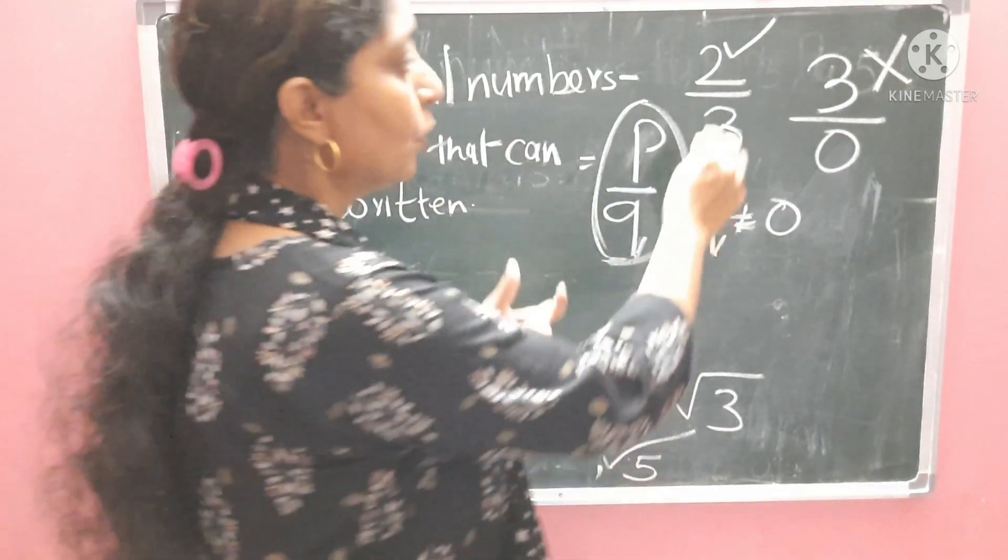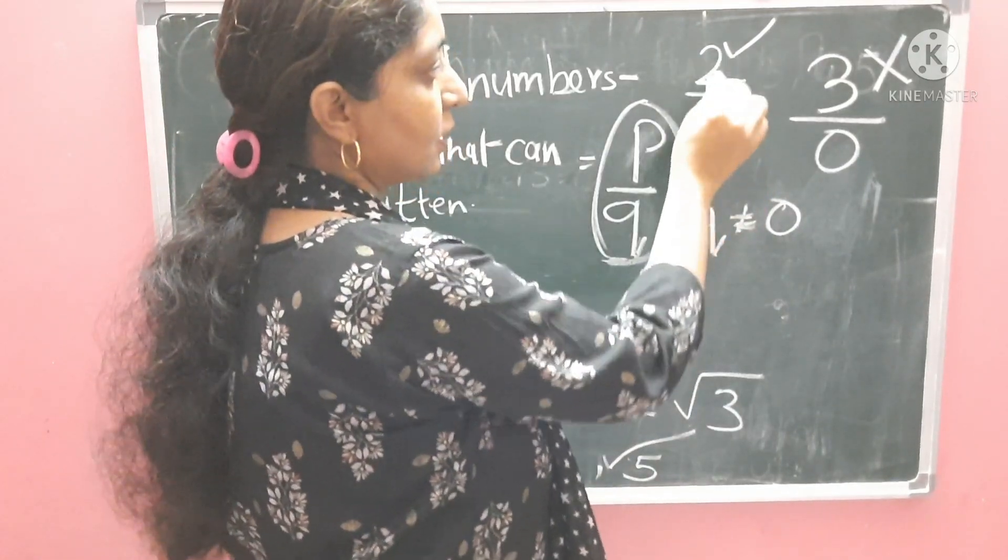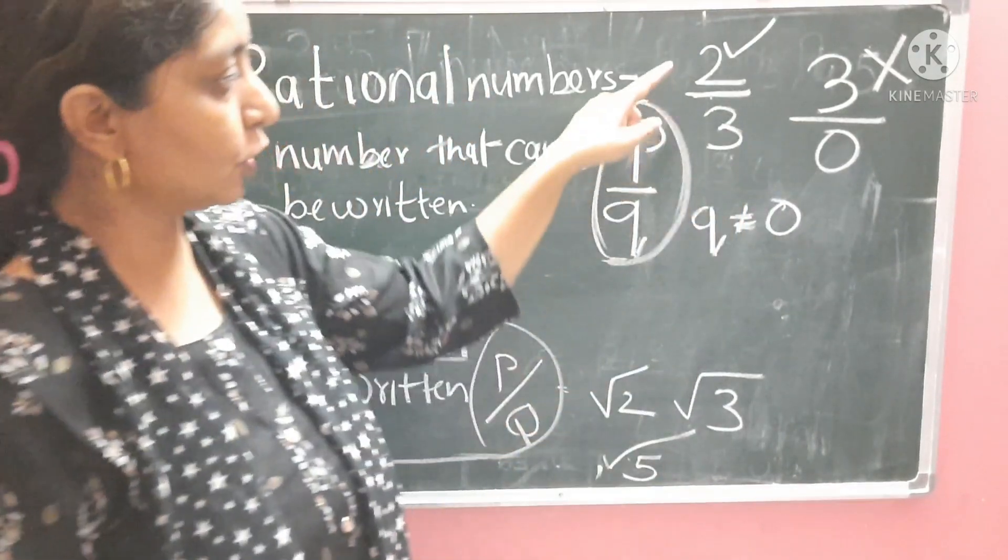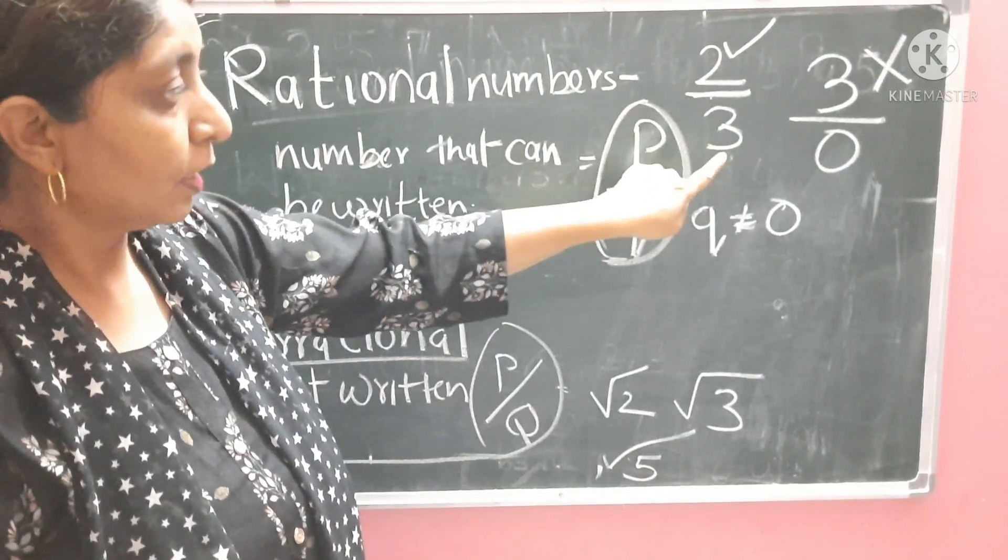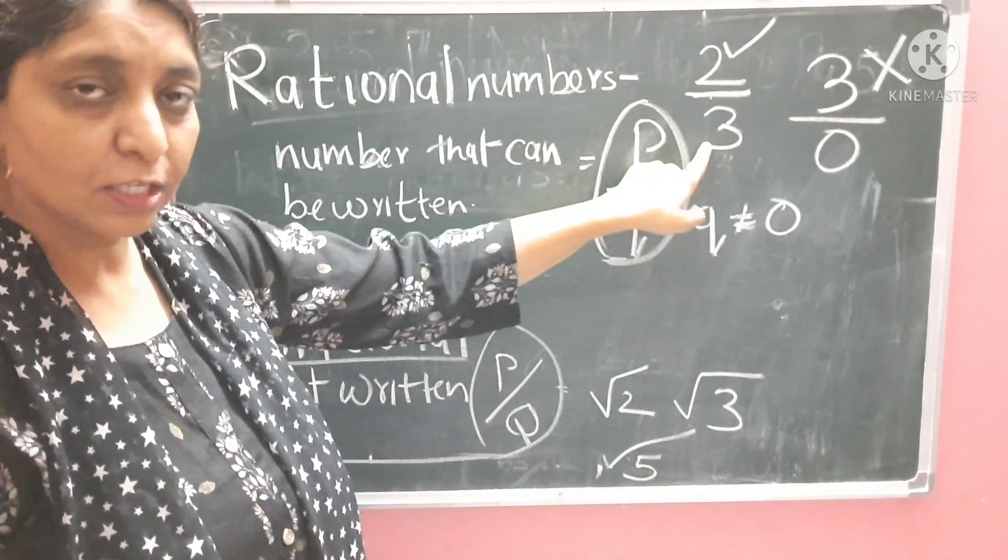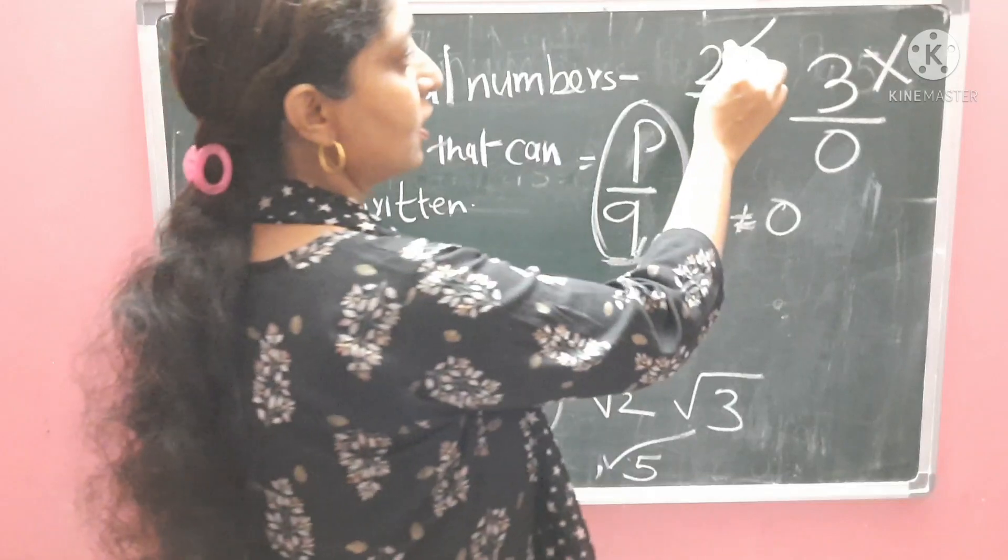Let me explain with an example: 2 upon 3. This is a number where numerator is 2, denominator is 3. Now, Q in the denominator is not 0. So, this is a rational number.